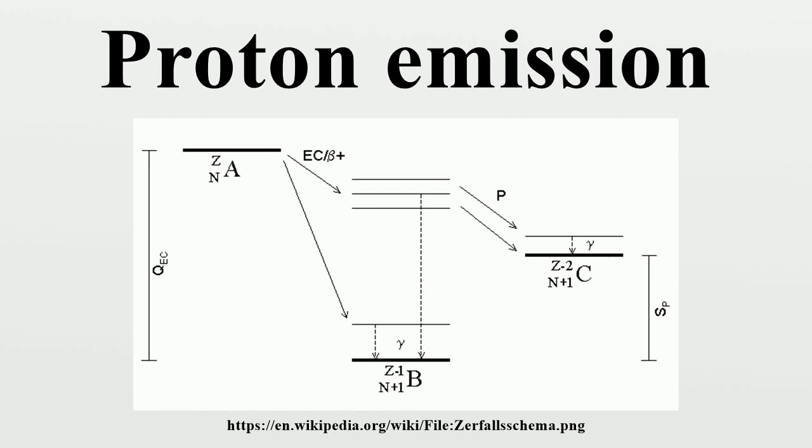Proton emission is a type of radioactive decay in which a proton is ejected from a nucleus. Proton emission can occur from high-lying excited states in a nucleus following a beta decay, in which case the process is known as beta-delayed proton emission, or can occur from the ground state of very proton-rich nuclei.